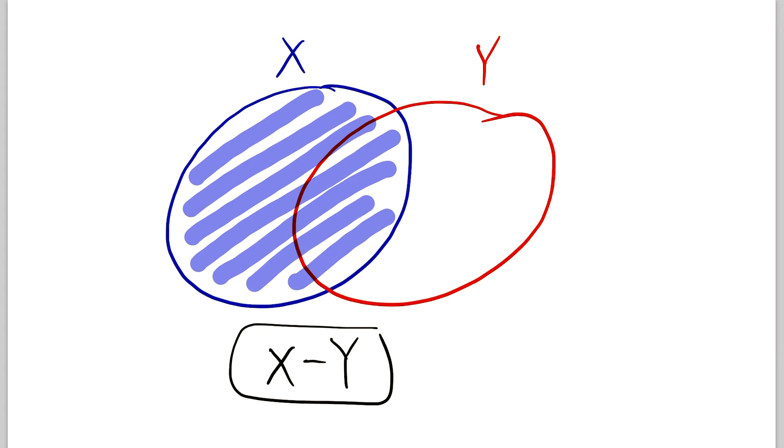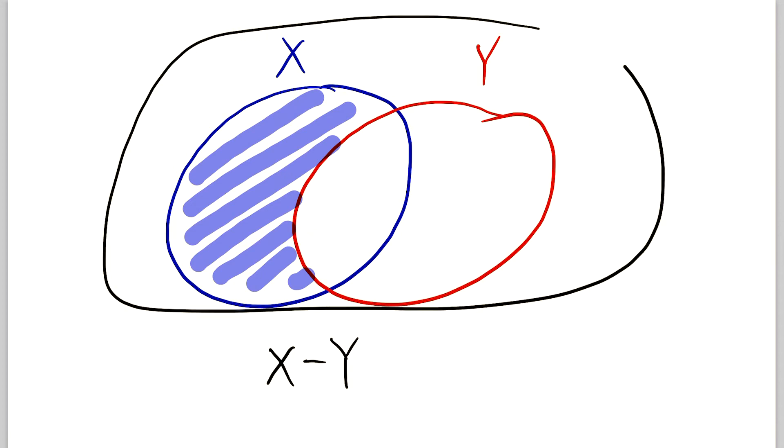Then, since we're subtracting Y from X, we need to take away everything that's in Y from what we've already shaded. So that's all of this stuff here in the middle that's contained in Y. We're taking Y away from X, so we need to erase all of this. And then this is what we're left with.